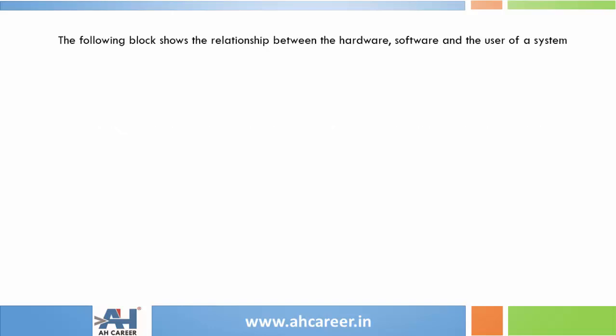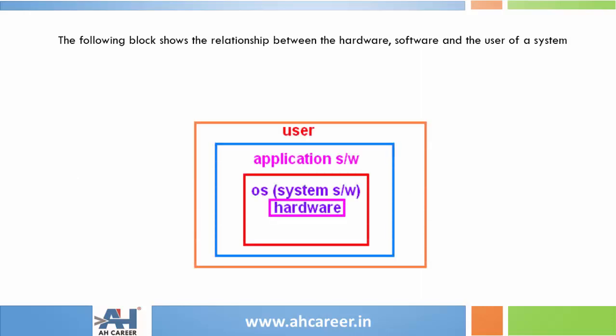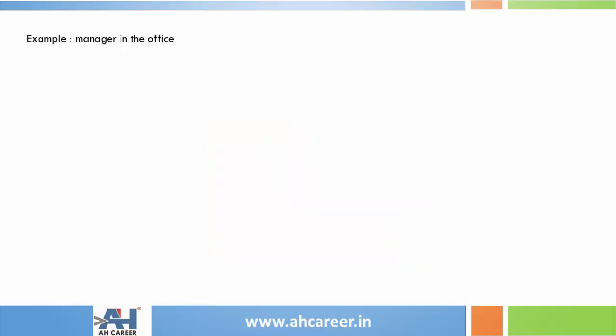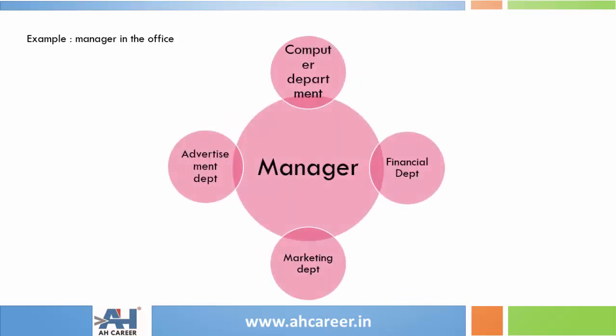We can see the block diagram of hardware, software, and user of a system — OS, system software or hardware, application software, and user. For example, we can see a manager in the office. This diagram shows how many tasks a manager handles in an office, such as the computer department, advertisement department, marketing department, and financial department. All these departments come under the manager.